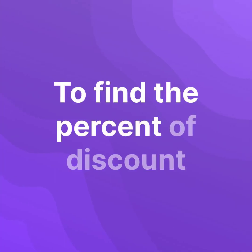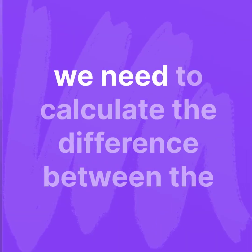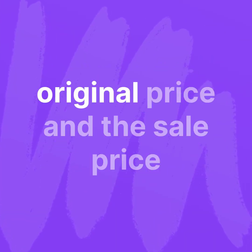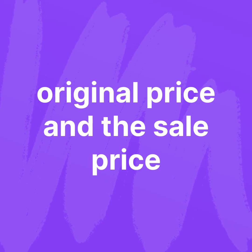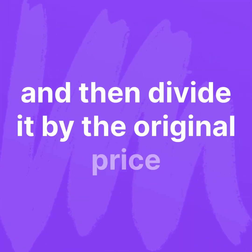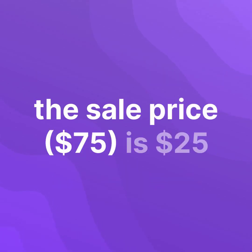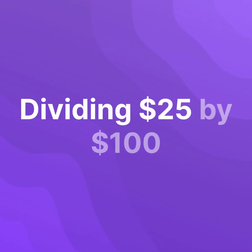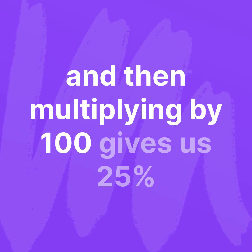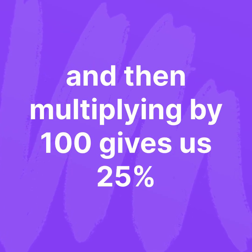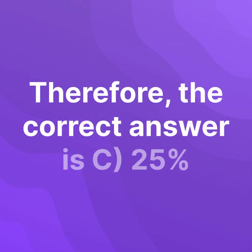To find the percent of discount, we need to calculate the difference between the original price and the sale price, and then divide it by the original price. The difference between the original price, $100, and the sale price, $75, is $25. Dividing $25 by $100 and then multiplying by 100 gives us 25%. Therefore, the correct answer is C. 25%.